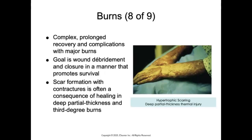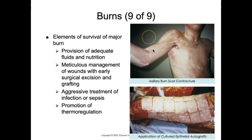Burn recovery is complex and prolonged, with many complications, especially if there is an inhalation injury as well. The goal is wound debridement and closure to promote survival. Scar formation with contractures may occur as the skin heals in deep partial thickness and third degree burns. Elements for survival of major burns include provision of adequate fluids and nutrition, meticulous wound management with early surgical excision and grafting — including application of thin sheets of keratinocytes on gauze to clean excised areas — aggressive treatment of infection or sepsis, and promotion of thermoregulation.